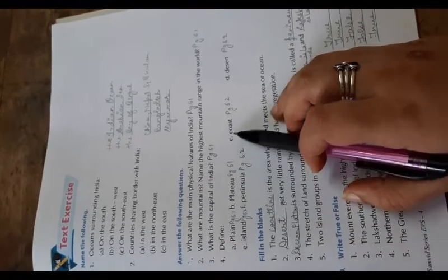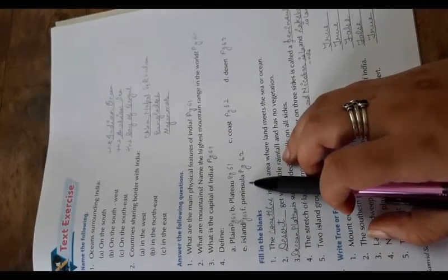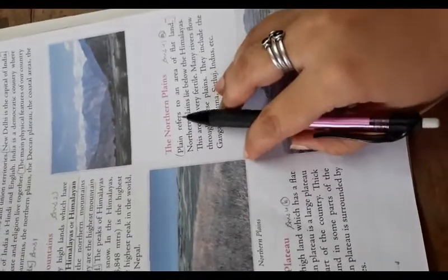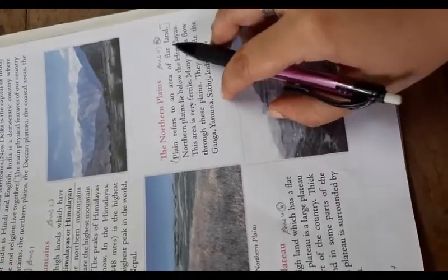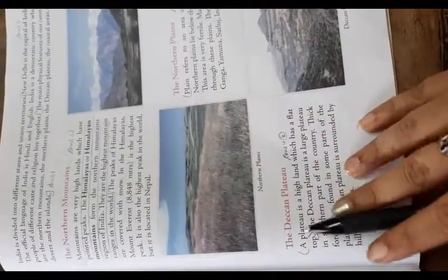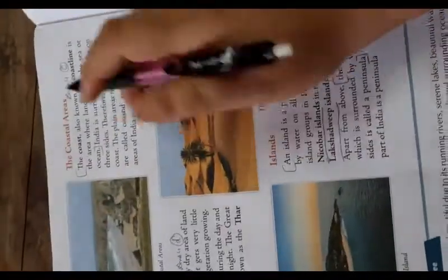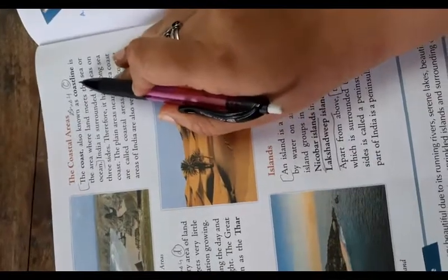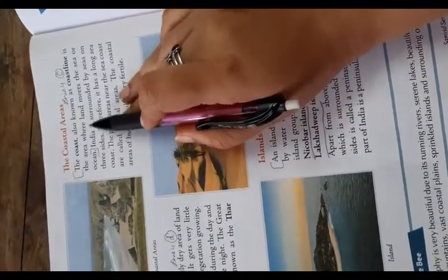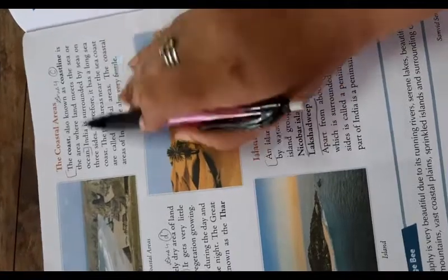Plateau on page number 61, coast page number 62, desert 62, island 62 and peninsula is on page number 62. So here, A: plains refers to an area of flat land. B: a plateau is a high land which has a flat top. C: coast also known as the coastline is the area where land meets the sea or ocean.